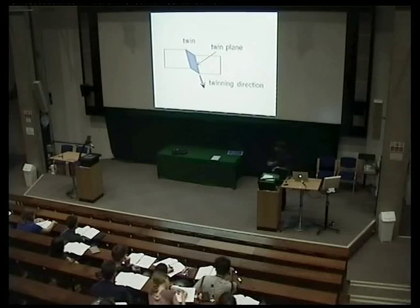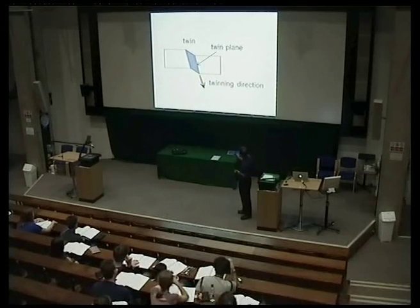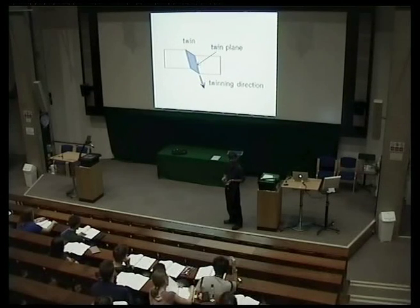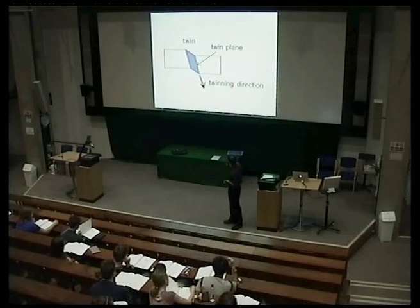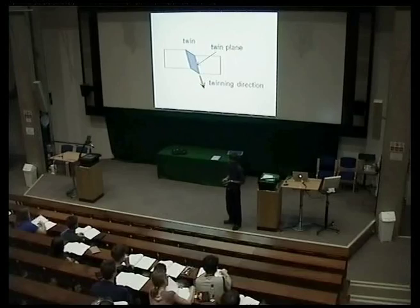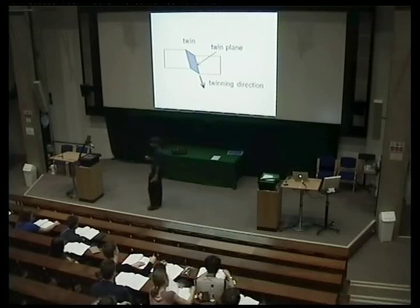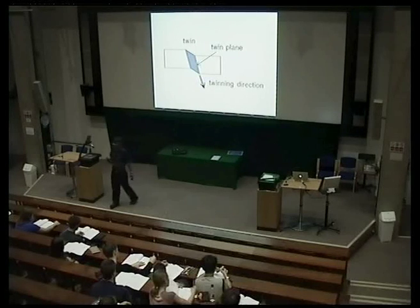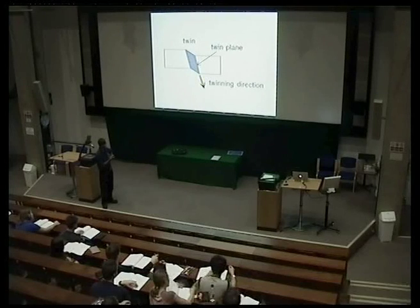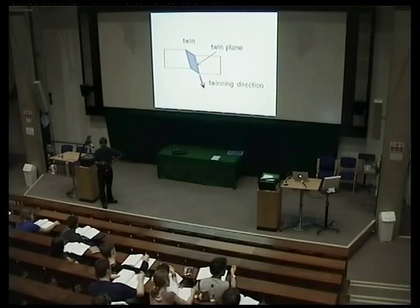When you take your single crystal and create a twin, if there's nothing surrounding it — just pushing against air — you will change the shape of your sample. You're shearing the crystal, and the magnitude of that shear we'll determine shortly, but it's very, very large. This is the largest sort of deformation you get in crystalline materials. The plane on which that shear occurs is called the twin plane, and the direction in which the shear occurs is the twinning direction.